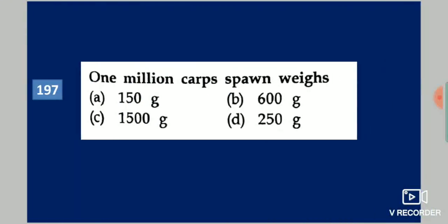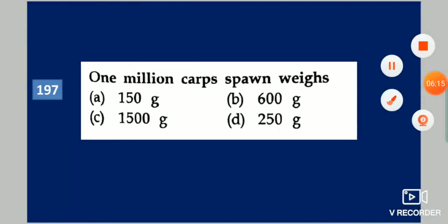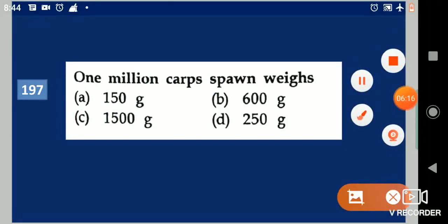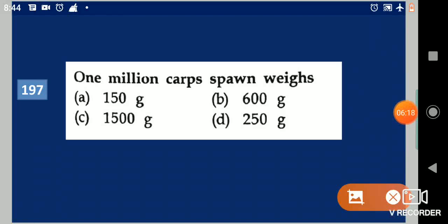Next question: One million calves' spun ways dash. Your options are: 150 grams, 600 grams, 1500 grams, 250 grams. Your answer is 1500 grams.